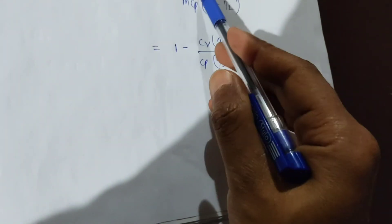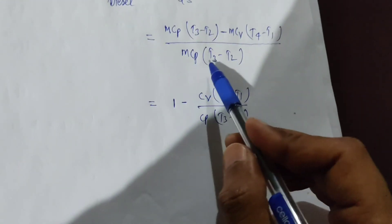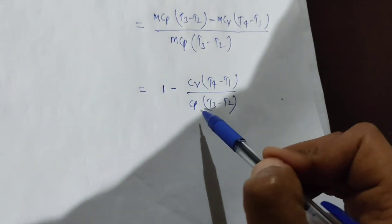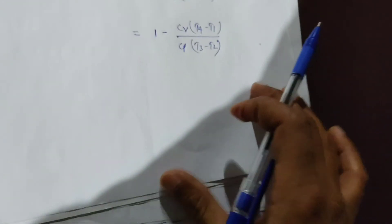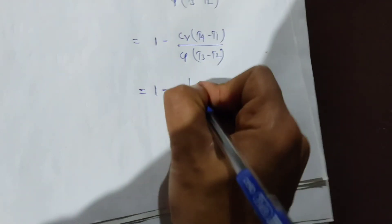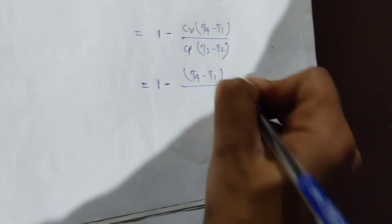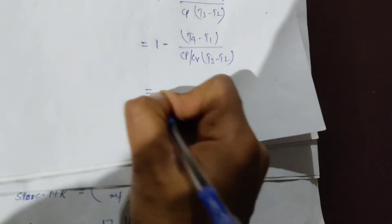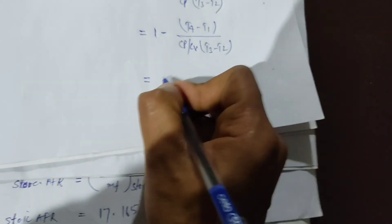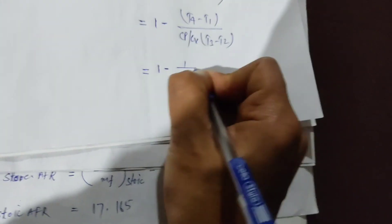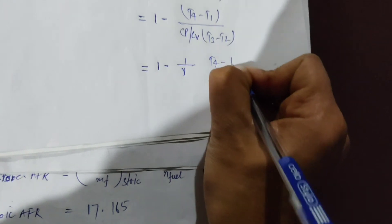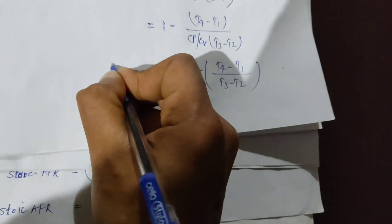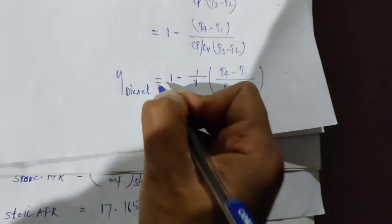So the thermal efficiency of the diesel cycle is equal to 1 minus (1/gamma) times (T4 − T1) divided by (T3 − T2). This is the final expression for the thermal efficiency of the diesel cycle. Thank you very much.